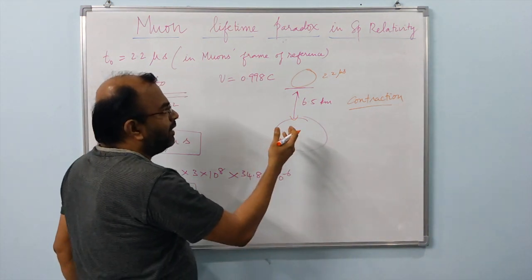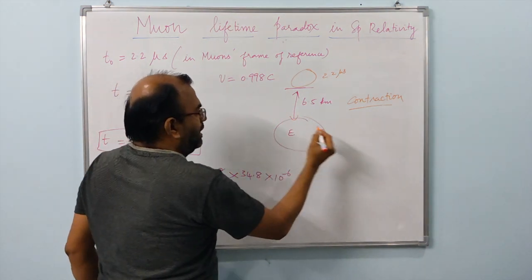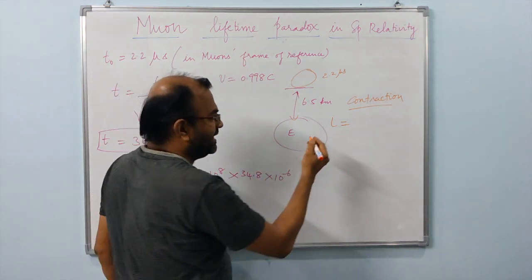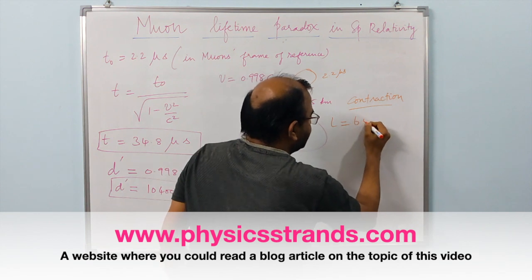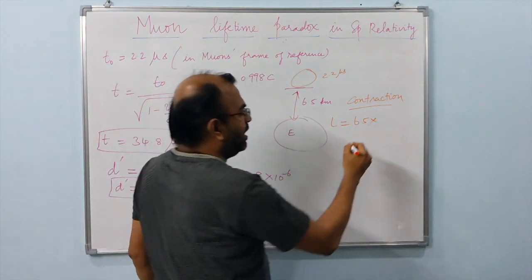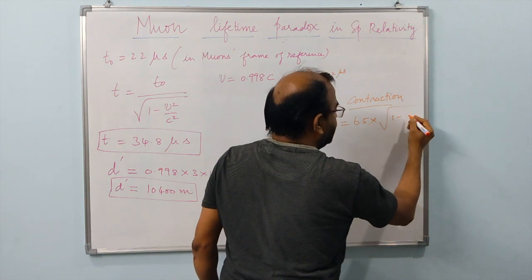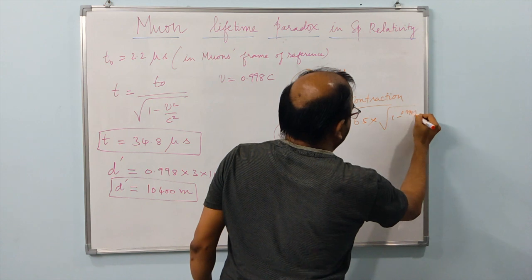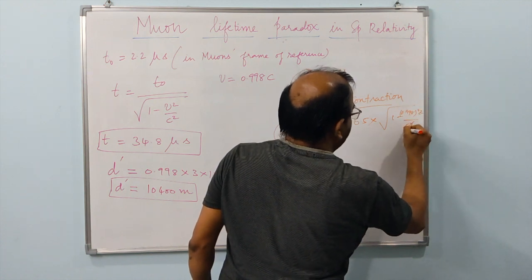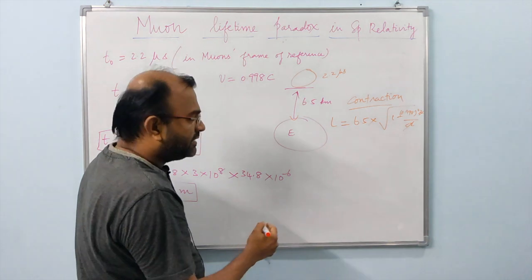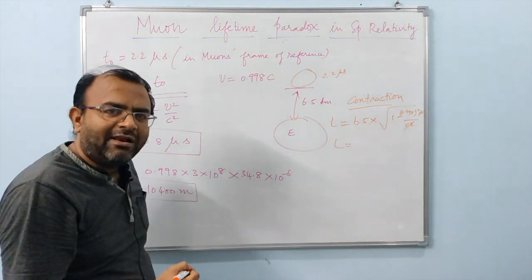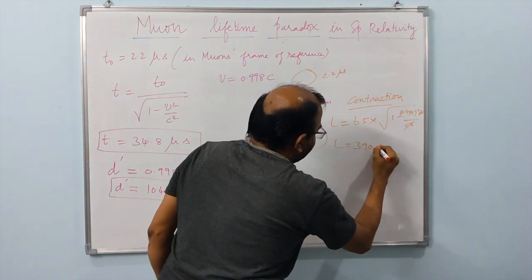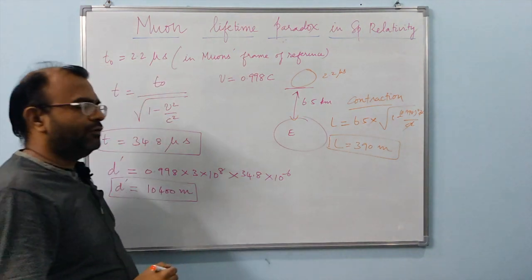We can do the numbers. The contracted length that the muons see in their frame of reference is the actual distance of 6.5 km multiplied by √(1 − v²/c²), where v = 0.998c. Working out the numbers, the distance the muons would have to travel to reach Earth's surface is only about 390 meters.